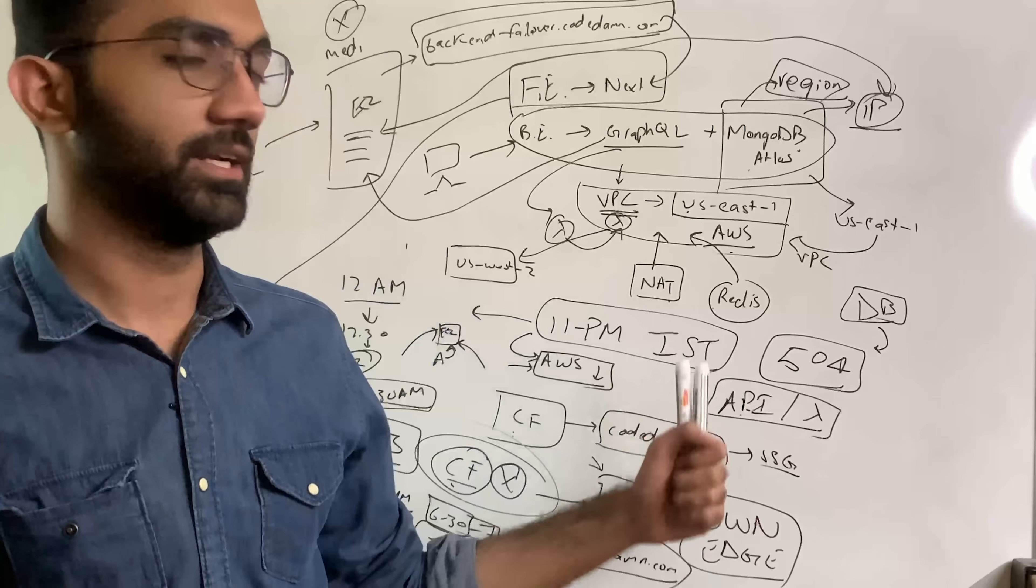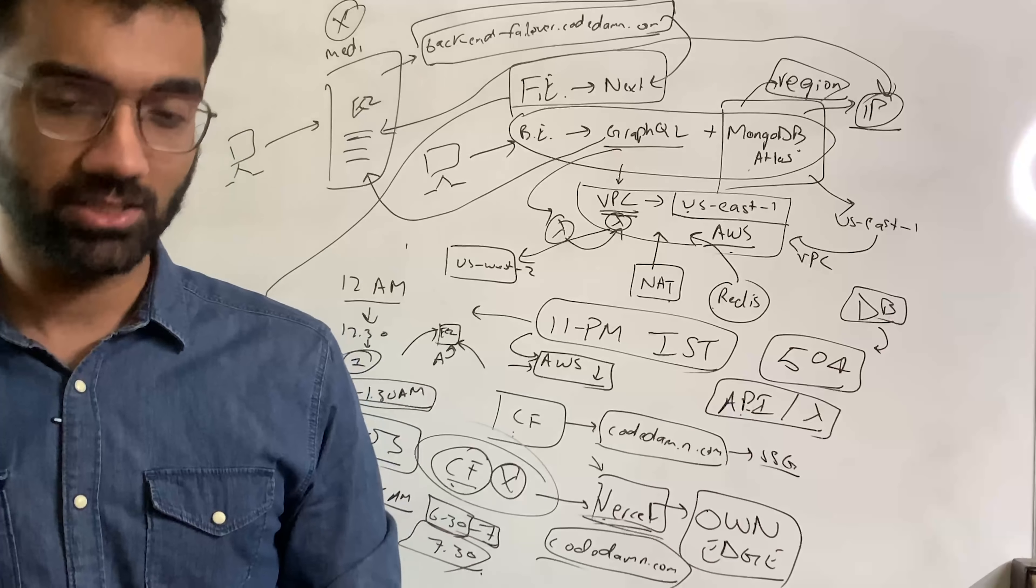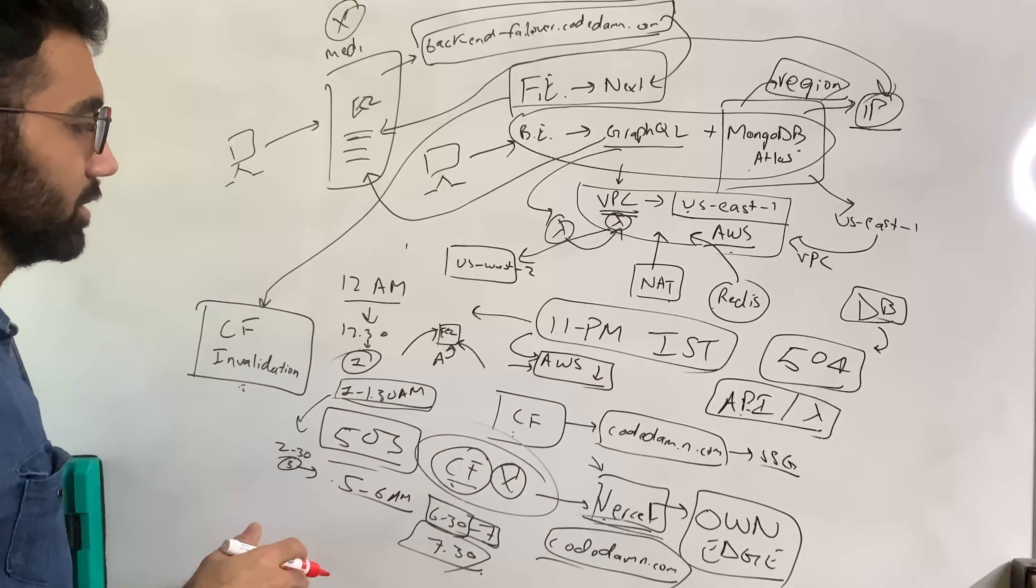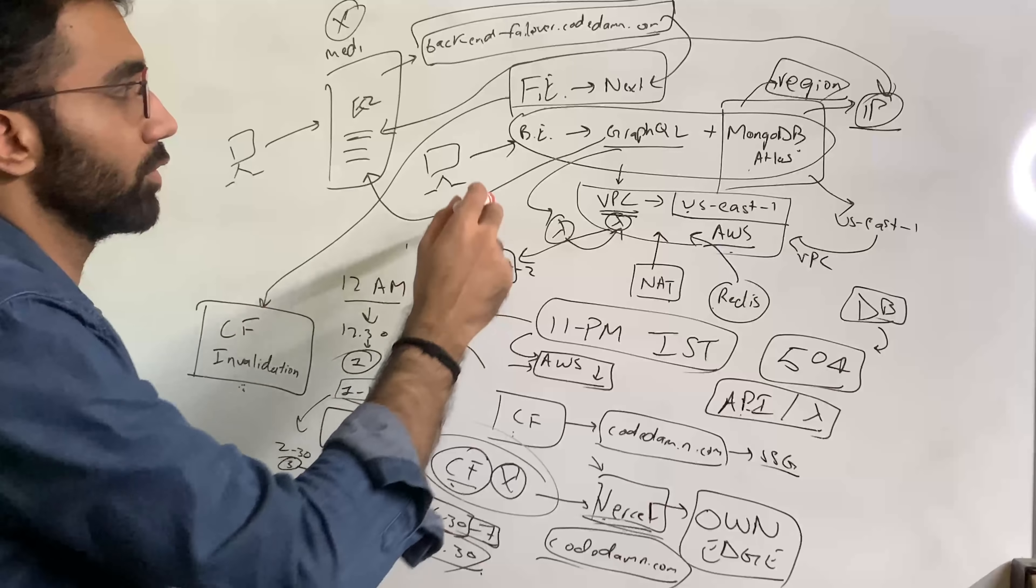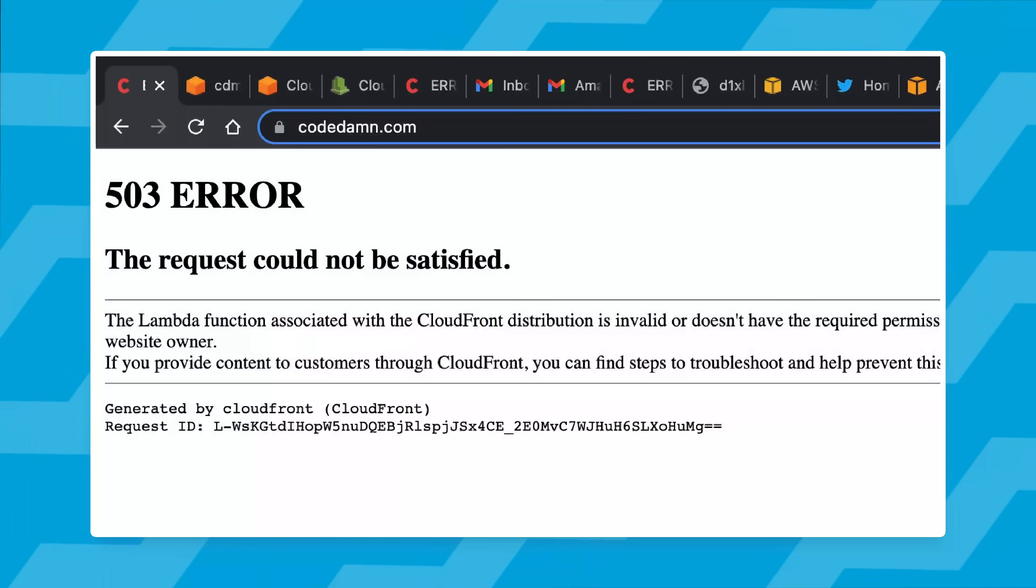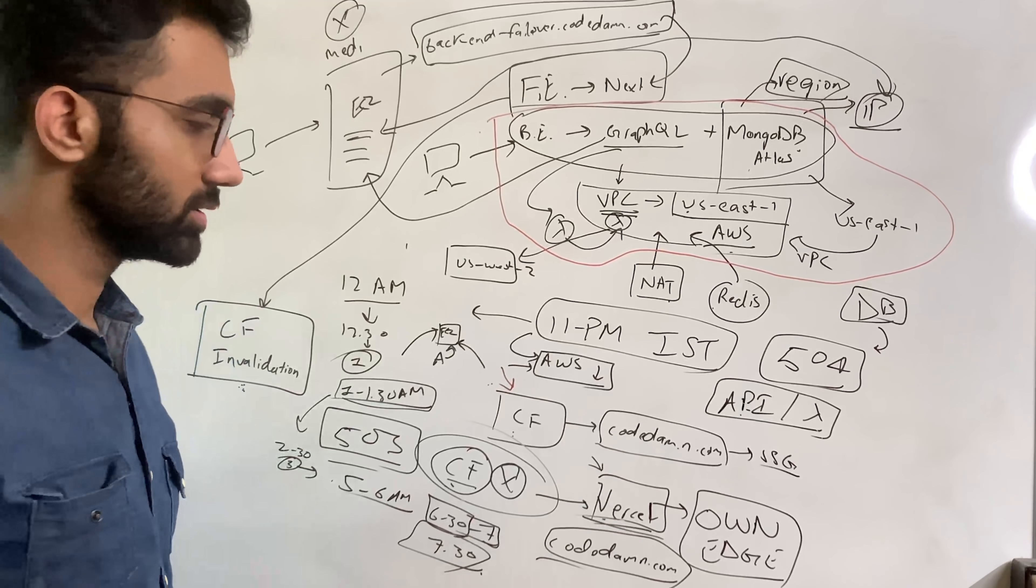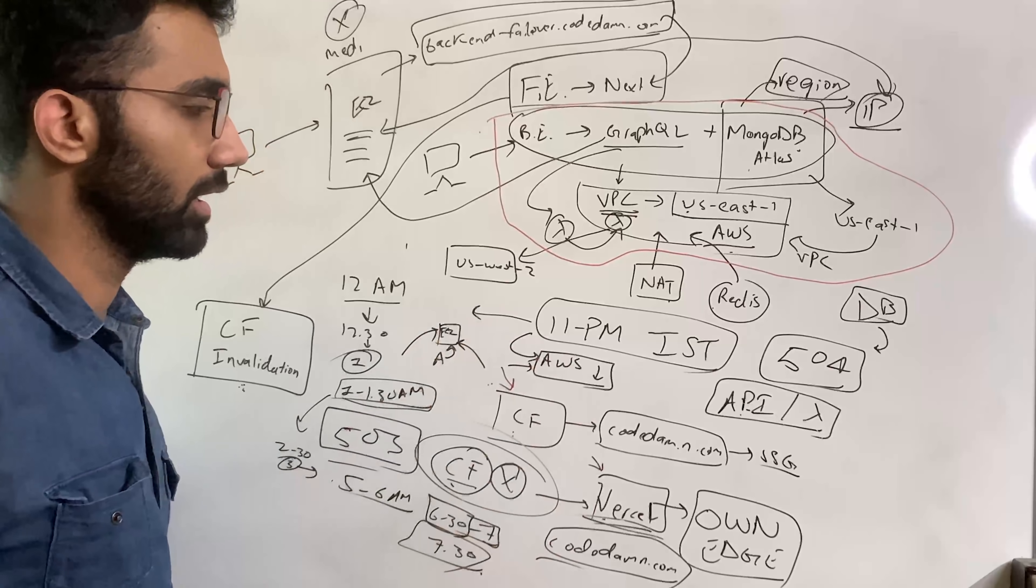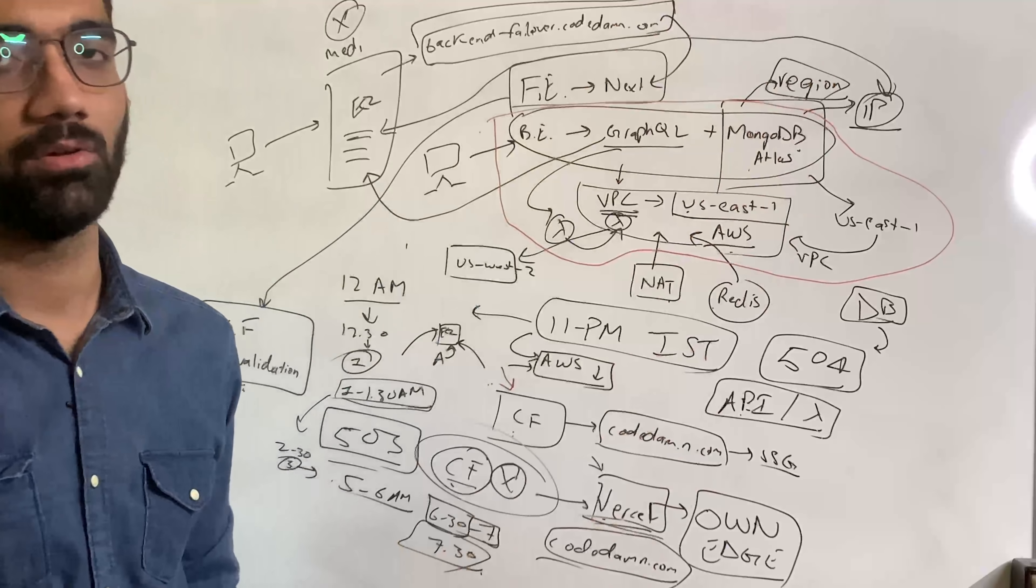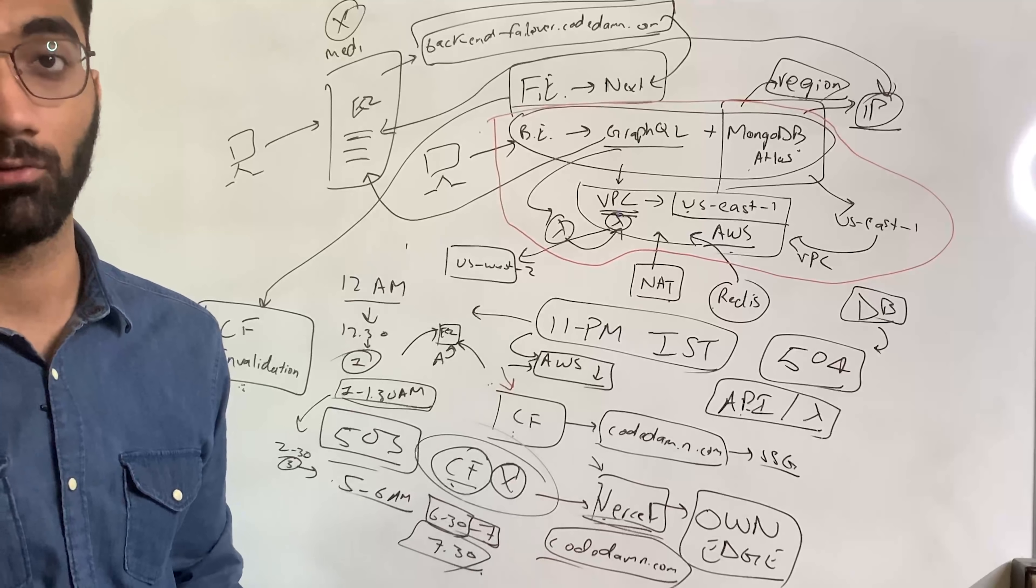So what can we learn about the downtime of Codedam from this outage? We can learn that in this scenario, even multi-region deployments would fail. Even if this was not the initial bottleneck, it would fail because CloudFront failed. This component which is global in AWS, it's a global service, this went down. So there was no point to have this architecture multi-region in AWS. It would still not work because CloudFront went down.